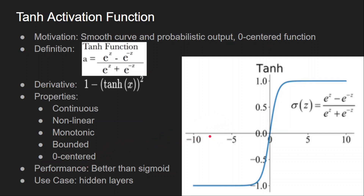The derivative exists at all points because it is continuous, and the function is non-linear in nature. It is bounded with limits -1 and +1. Tanh works better than sigmoid because of its zero-centred nature. However, it cannot be used in the output layers for classification because we cannot have negative probabilities, so it can only be used for hidden layers. Tanh also has the vanishing gradient problem because of the saturations in its curve.